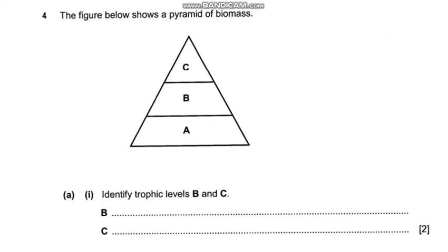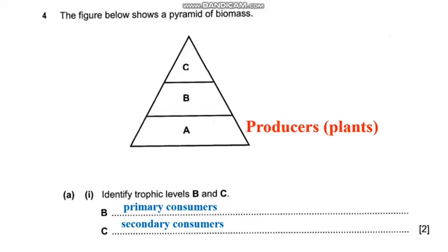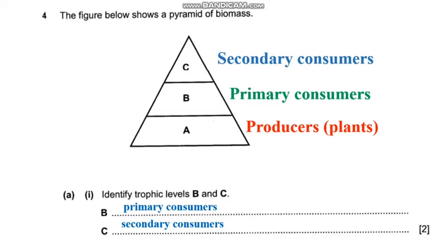The figure below shows the pyramid of biomass where we have trophic levels A, B and C. Question A1: identify trophic levels B and C. Trophic level A will be the producers where we have plants. Trophic level B is the primary consumers where we have the herbivores, and trophic level C is the secondary consumers where we have the carnivores.